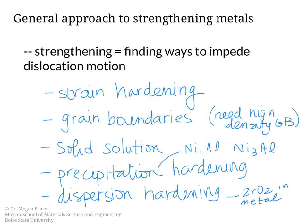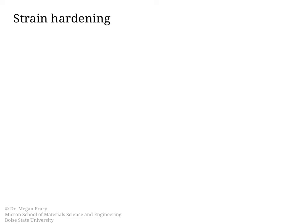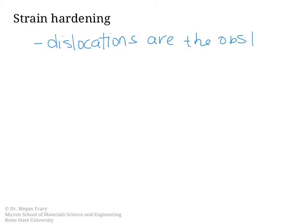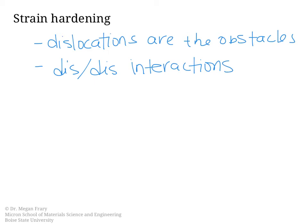We will work through each one of these one at a time in the videos that follow, although we will start right now and take a look at how strain hardening works. In the case of strain hardening, the dislocations themselves are the obstacles to other dislocation motion. We get strengthening when we have dislocation-dislocation interactions, and the strengthening observed will be related to the dislocation density — the higher the dislocation density, the more dislocation-dislocation interactions there will be.